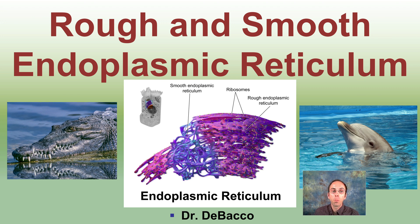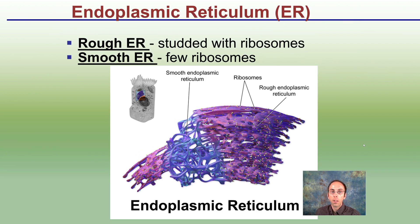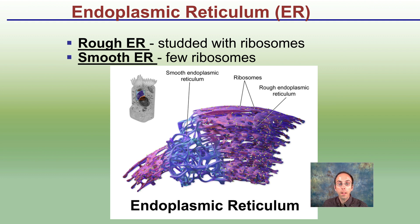Here we're going to learn about the rough and smooth endoplasmic reticulum, typically referred to as the rough and smooth ER. You can see a comparison between two animals here — one with a very rough textured skin and one with a very smooth texture. What makes the rough ER rough is the ribosomes studded on the outside, giving it that rough appearance. The smooth ER has very few ribosomes, giving it a much smoother, more consistent look.